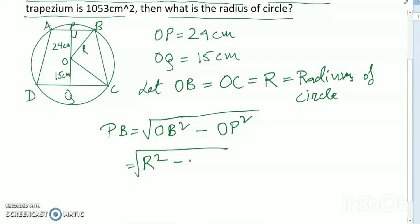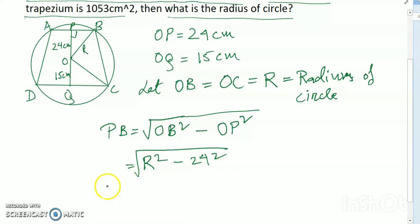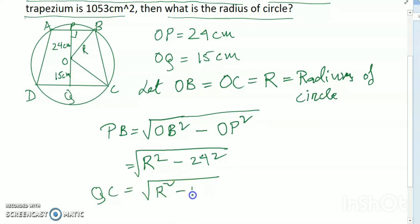So PB = √(r² − 24²). Similarly, QC = √(r² − 15²). The formula used here is the Pythagorean theorem.